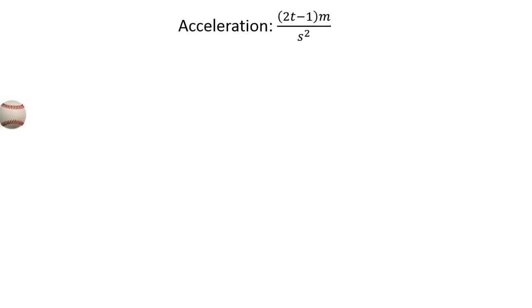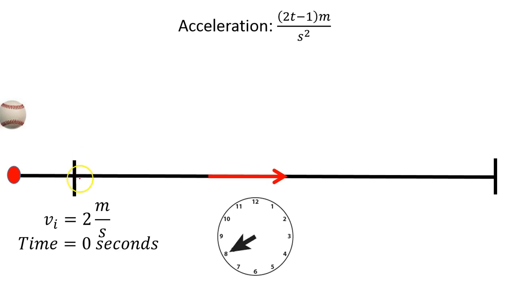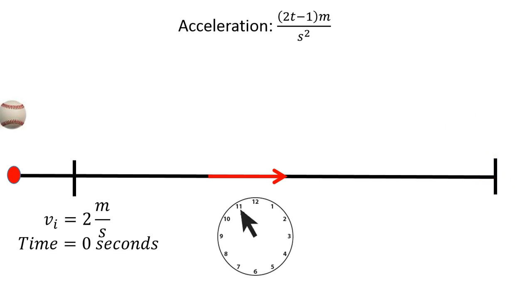So we have this particle — in this case it's a baseball — and we know we're going to shoot this baseball off at an acceleration defined by that function above. Now if we want to time the whole event, and we know that we've got a path, how can we figure out from the time that the baseball is at 2 meters per second, how far the actual baseball travels, as well as how fast it's going to reach the end of that path.